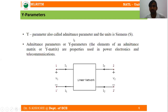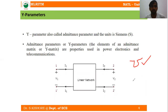Y-parameters are basically the admittance parameters, which are the inverse of impedance. Admittance parameters are measured in Siemens, or equivalently in inverse ohms, also called 'mho'. We can call the admittance parameters the short-circuit admittance parameters.